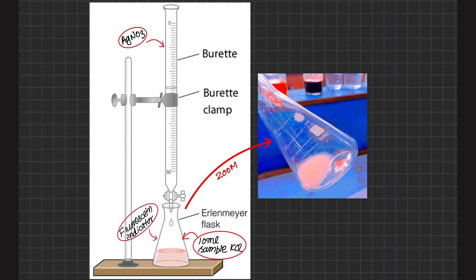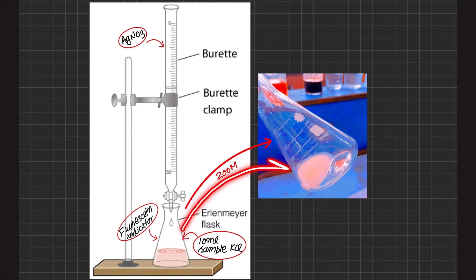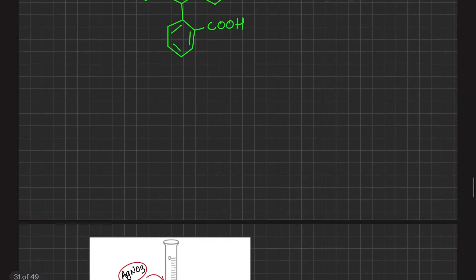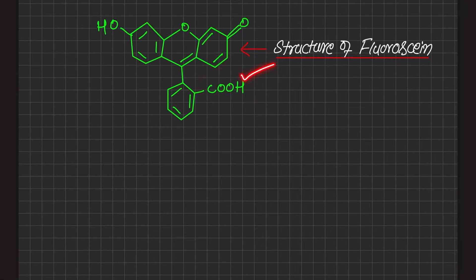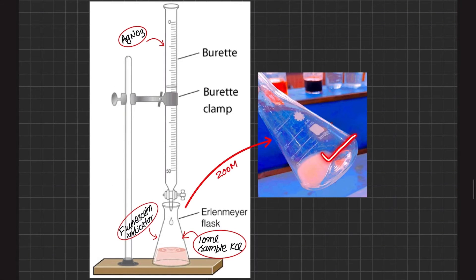As we add silver nitrate in the flask, it reacts with chlorides to form silver chloride precipitate. But once all the silver chloride has been precipitated, the next drop of silver nitrate will react with the fluorescein indicator and make a complex with it. This complex is pinkish in color, marking the endpoint. In the reaction, the hydrogen from fluorescein is removed, forming its negative ion, and silver attaches to it — forming a light pink complex that is the endpoint.